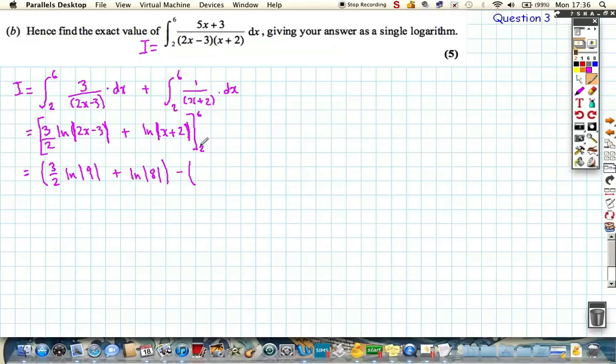Take away. Now the same thing in square brackets, but this time, substituting 2 in. So we get 3 over 2 ln, 2 lots of 2 is 4 minus 3 is 1. And then we get sticking 2 into here, we get a log 4. So 2 plus 2 so plus 4.